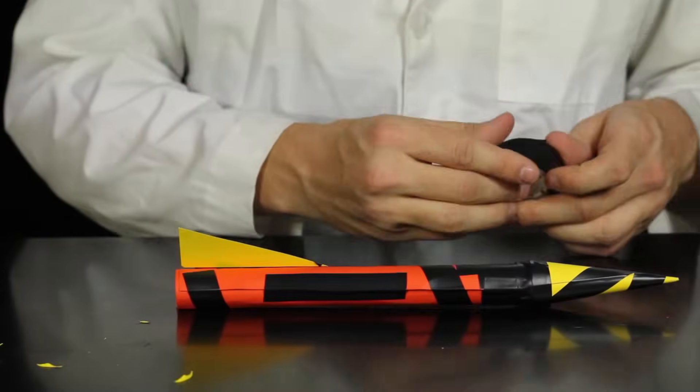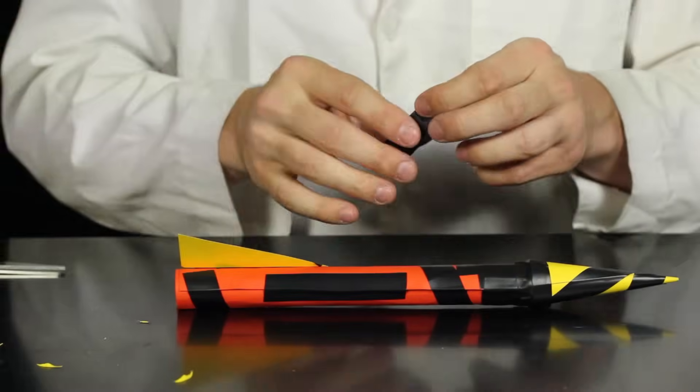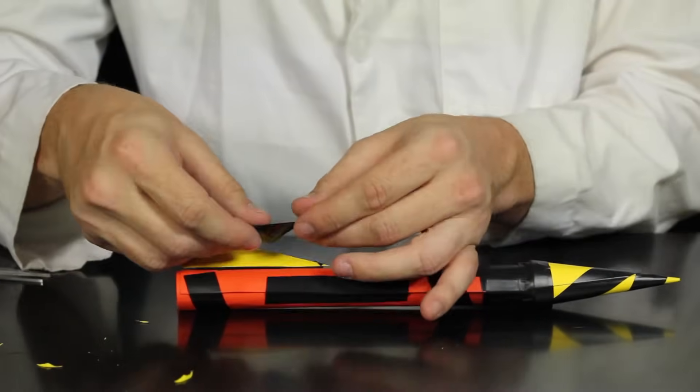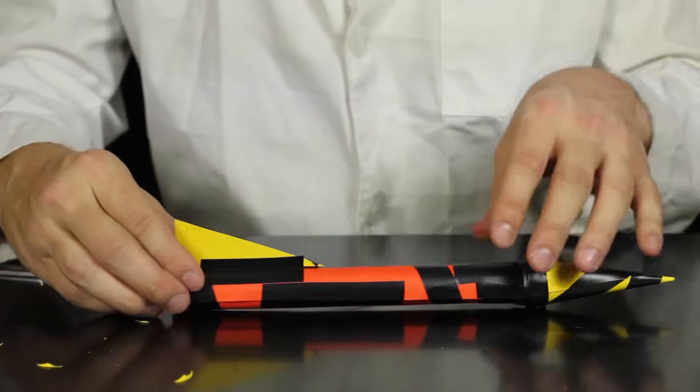Tape both sides of the tail fin to the rocket body if you want it to stand straight out perpendicular to the rocket body. Once you've attached all the tail fins, your rocket's ready to fly.